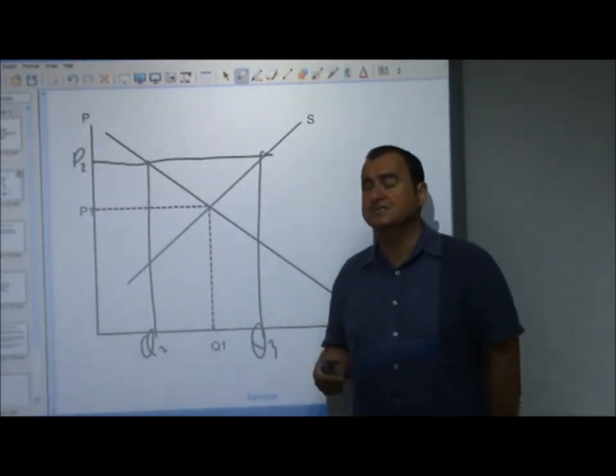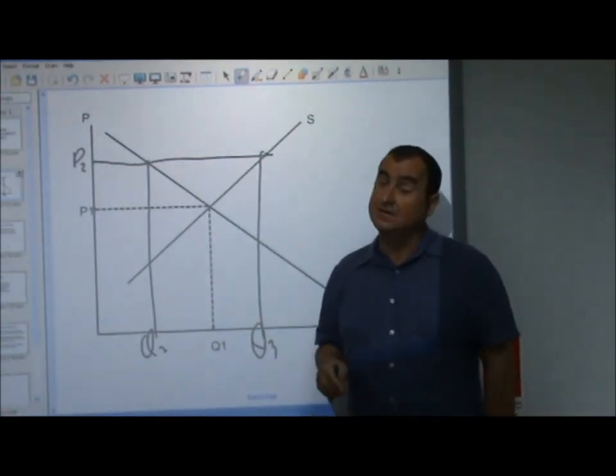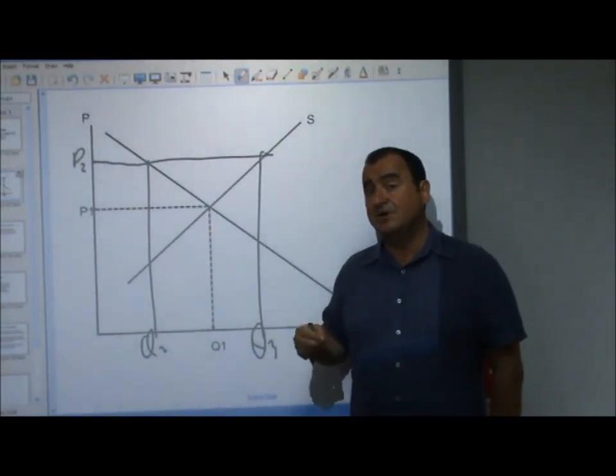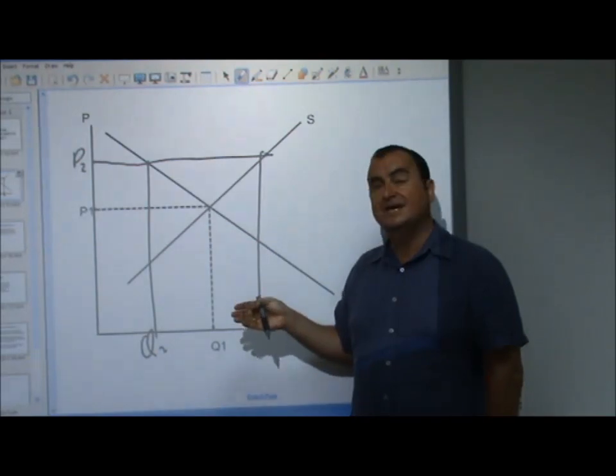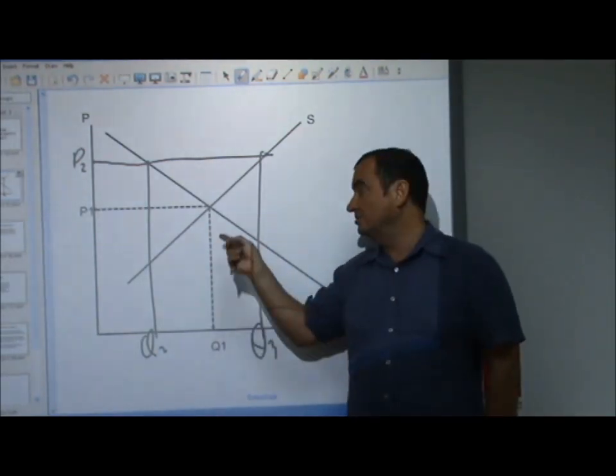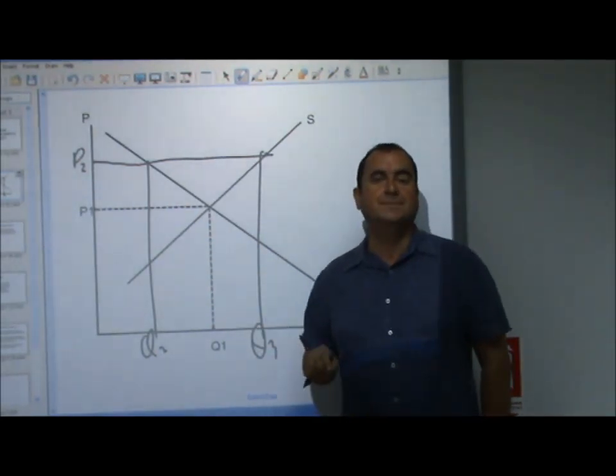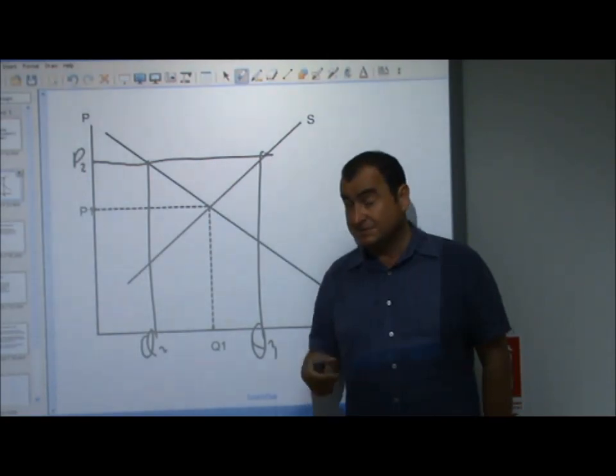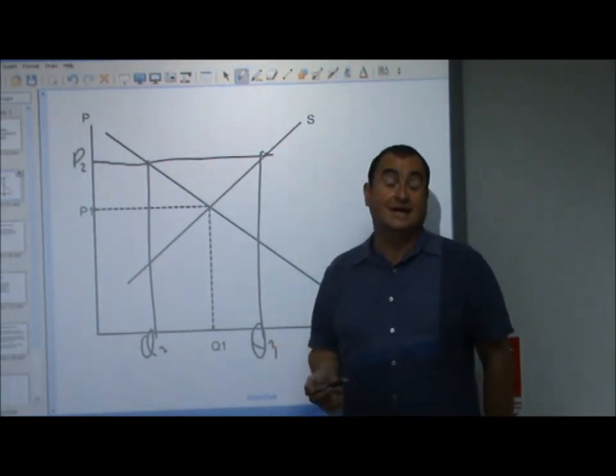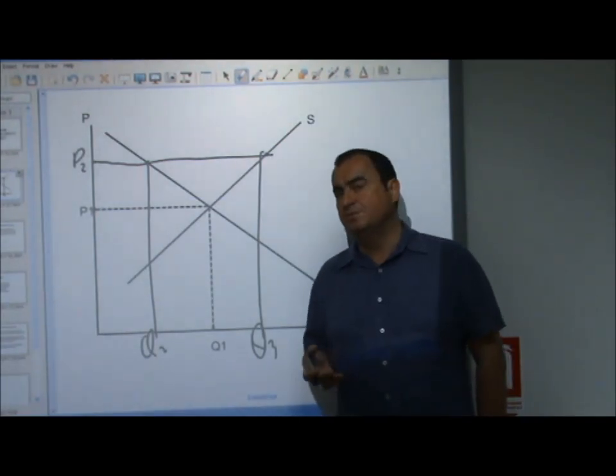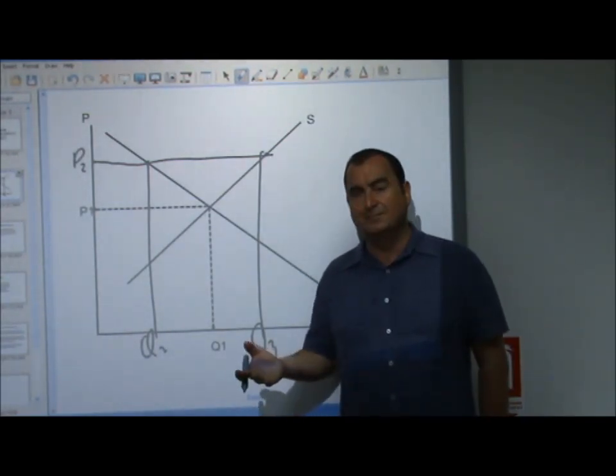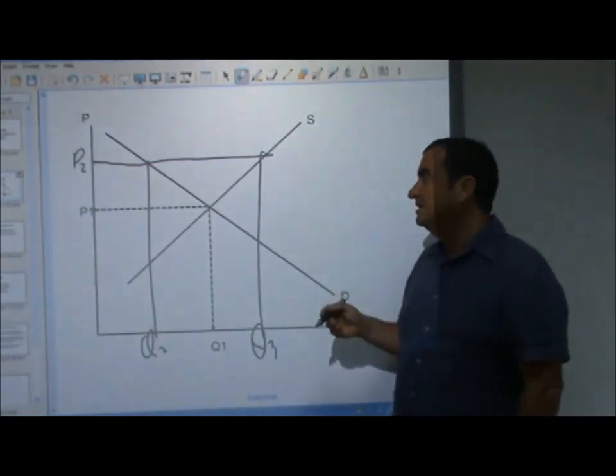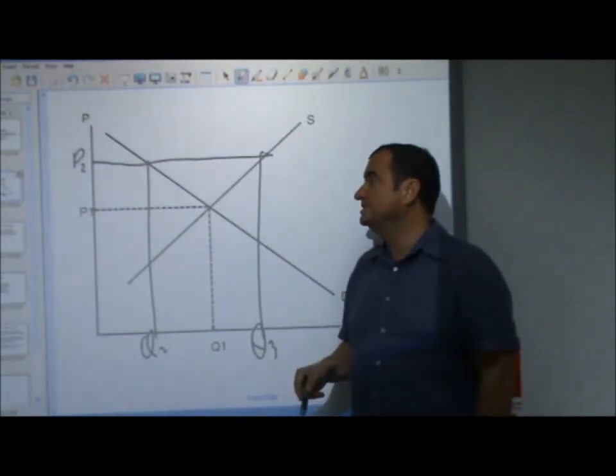Suppliers have produced this because they're attracted by the high price P2, but they can't sell Q2, Q3. This will cause them to lower their price. And as the price falls, more is demanded until everything is sold at price P1. We see this happening when clothes shops put goods on sale. They lower the price because they haven't been able to sell the products, and to get rid of their excess supply.